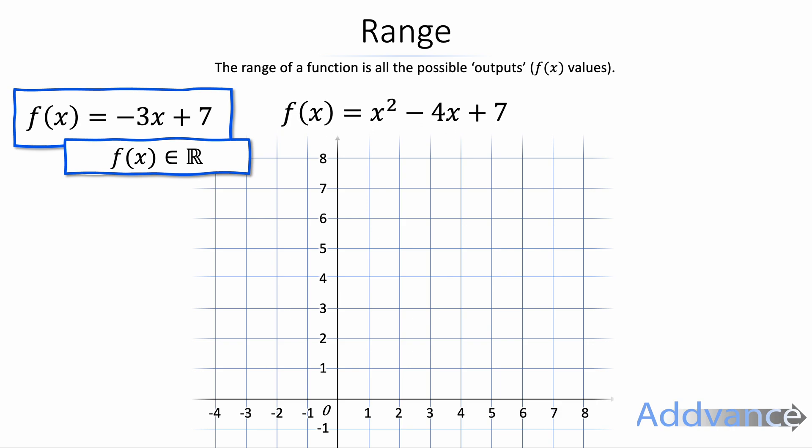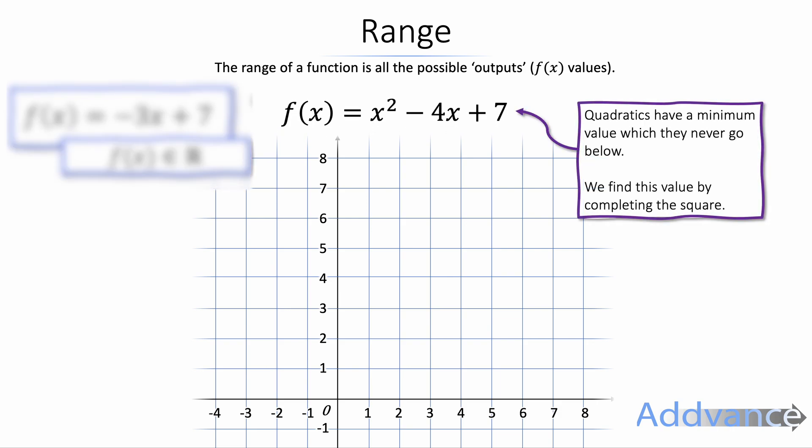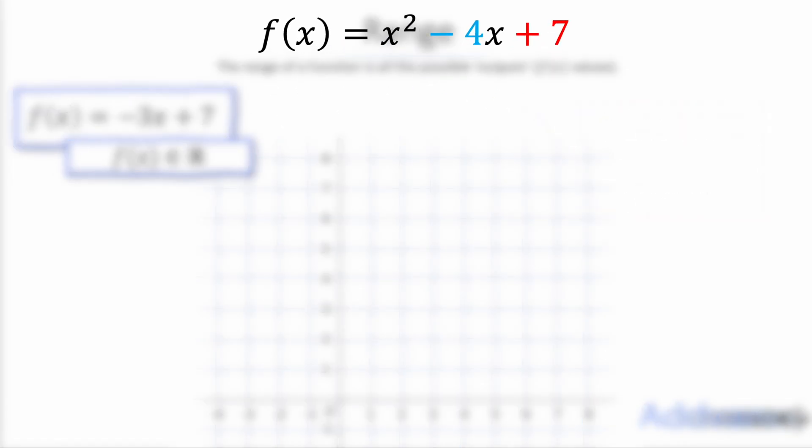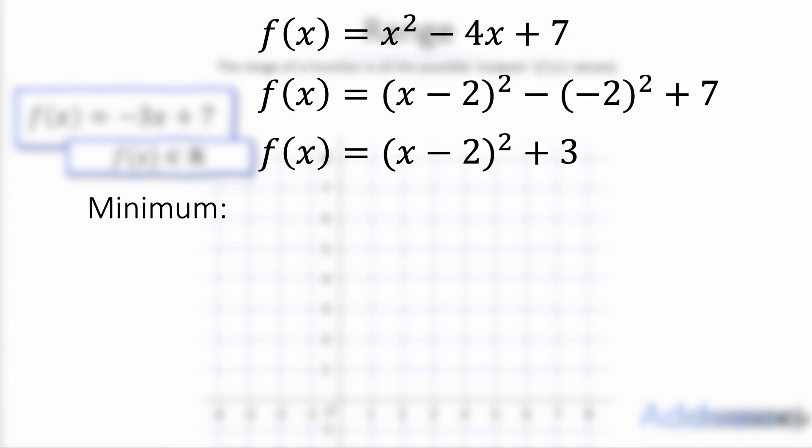Now quadratics are a bit more complicated now. Quadratics have a minimum value which they never go below. So it must be above that minimum value and it cannot be below that minimum value. To find that minimum value we need to complete the square. To complete the square we half the middle number and we get x minus 2 squared. And then we subtract minus 2 squared and then we add 7. Simplify that and we get x minus 2 squared plus 3.